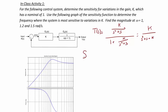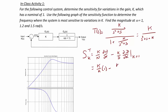Then getting the sensitivity function for the closed-loop transfer function with respect to k, we get k over N times the partial derivative of N with respect to k, minus k over D times the partial derivative of D with respect to k, evaluated at k equal to 1. Putting in the numerator and denominator of the closed-loop transfer function, we have k over k times 1, minus k over s² plus s plus k times 1, which simplifies to 1 minus k over s² plus s plus k, equaling s² plus s over s² plus s plus k.